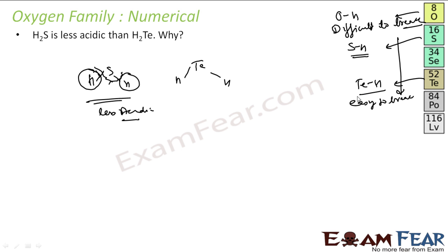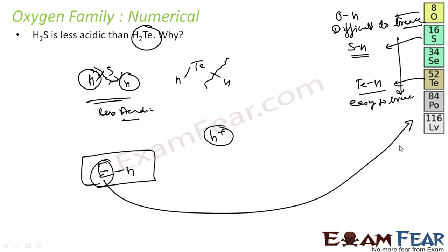So if you compare with the SH also, SH bond and TeH bond, SH bond difficult to break, TeH bond easy to break. Since TeH bond is easy to break, this will break easily and form H plus and it will be acidic. Thus, my H2Te is more acidic than H2S or I can say H2S is less acidic than H2Te. It's all about my bond dissociation enthalpy. And this value decreases down the group, or my EH bond dissociation enthalpy. E is my any of these elements, H is my hydrogen.